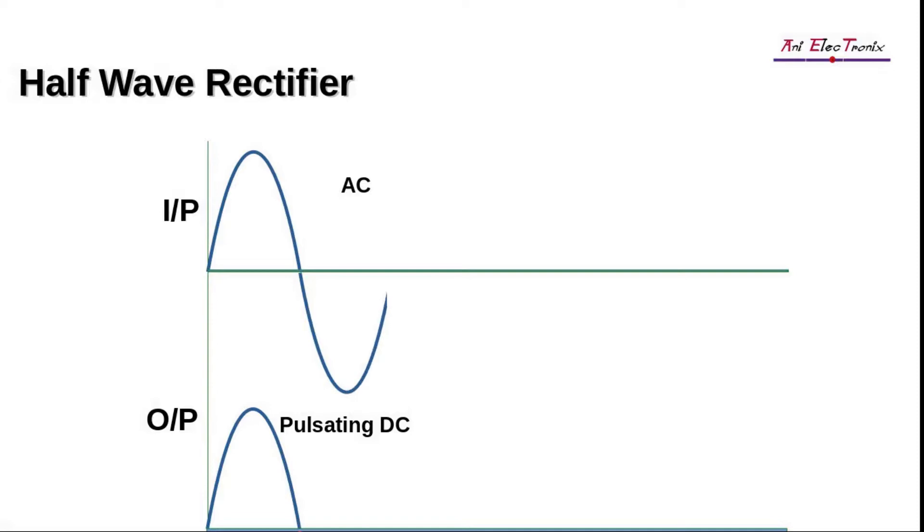Let us now calculate the DC value of the output voltage. Let us assume that VPin is the peak or maximum value of the input source voltage and that VPout is the same for the output voltage. For an ideal diode, VPin is equal to VPout.